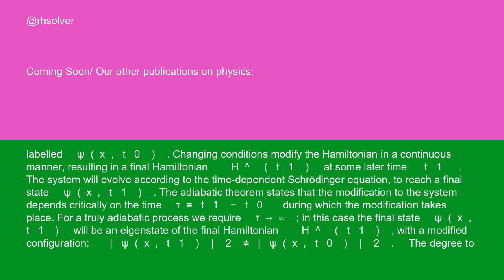The adiabatic theorem states that the modification to the system depends critically on the time tau equals T1 minus T0 during which the modification takes place. For a truly adiabatic process, we require tau approaching infinity. In this case, the final state psi(x, T1) will be an eigenstate of the final Hamiltonian H-hat(T1), with a modified configuration — |psi(x,T1)|² is not equal to |psi(x,T0)|².